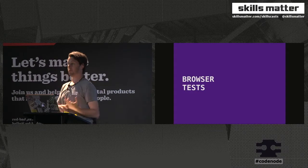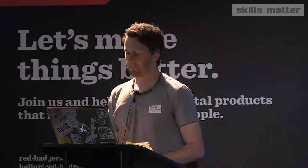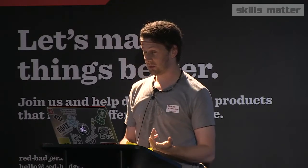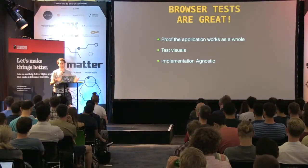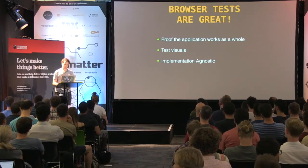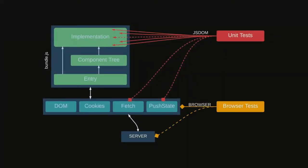Another thing people do to get around this is browser tests — you just load the whole app. Browser tests are great too. They're a proof that the application works as a whole. You can even test the visuals — take screenshots, make sure things are visible on the page. They're implementation-agnostic to some extent; you don't have to go into the implementation, you're just looking at what's on the page. Sometimes you need to control the server a little bit — test accounts or a test environment to create scenarios.